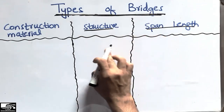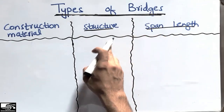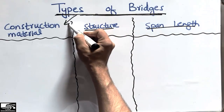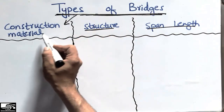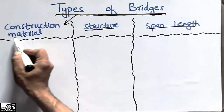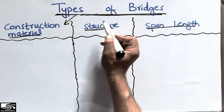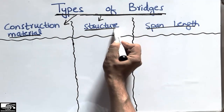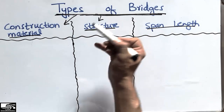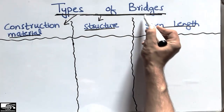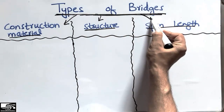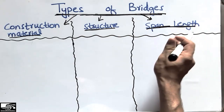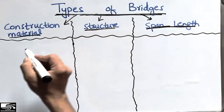There are three basic types of bridges. They are classified according to the construction material — what material the bridges are made up of. The second type is according to the structure — what type of structure is involved in the construction of bridges. The third type is the span length — they are classified according to the length of the bridge.